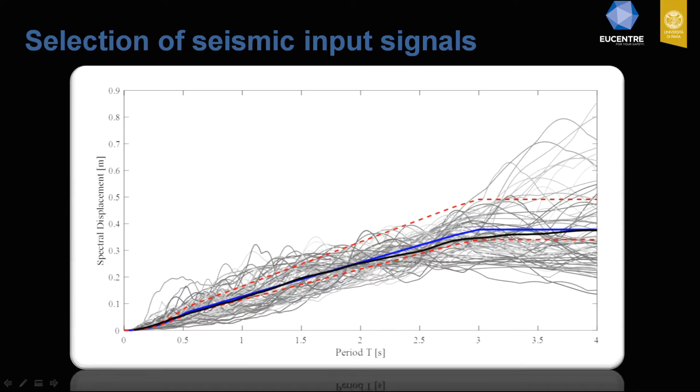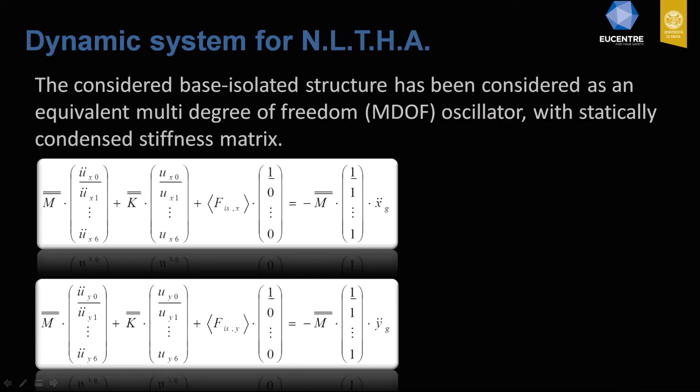These results show spectrum compatibility with respect to the displacement spectrum. All events are very close to the target spectrum provided by the Italian standard code. Those events have been applied to the dynamic system to carry out nonlinear time history analysis. The full structure has been computed as a multi-degree of freedom oscillator for both directions X and Y, with the superstructure linearly modeled according to the condensation procedure. The only coupling in the equations is provided by the hysteretic response of the isolation system due to the biaxial interaction of the directions of motion.